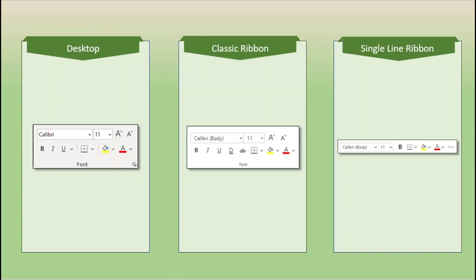The next group in all of these ribbons is the font group, and we're going to find great similarity between the desktop version and the classic browser ribbon, and even quite a bit of similarity with the single line ribbon. First of all, we have the font name and size — here we have the font name and size, font name and size — so that is consistent. Looking at the desktop version, we can also increase and decrease the font size. We have those same buttons with the classic ribbon, but we do not have them with the single line ribbon.